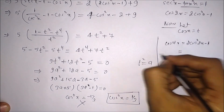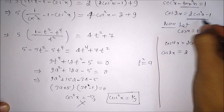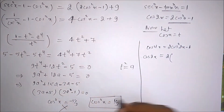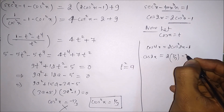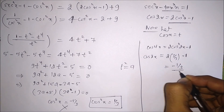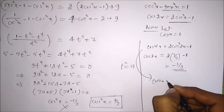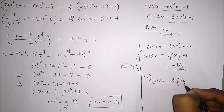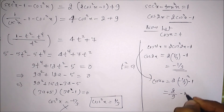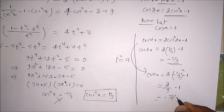We find cos2x using the formula 2cos²x - 1. Since cos²x = 1/3, cos2x = 2(1/3) - 1 = -1/3. Now cos4x = 2cos²(2x) - 1 = 2(-1/3)² - 1 = 2/9 - 1 = -7/9. So the answer is cos4x = -7/9.